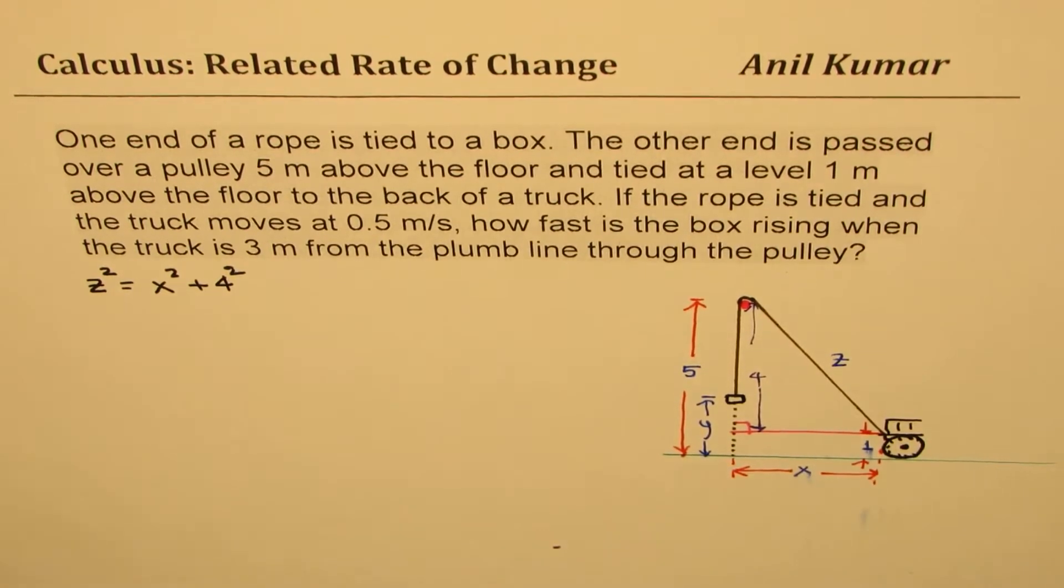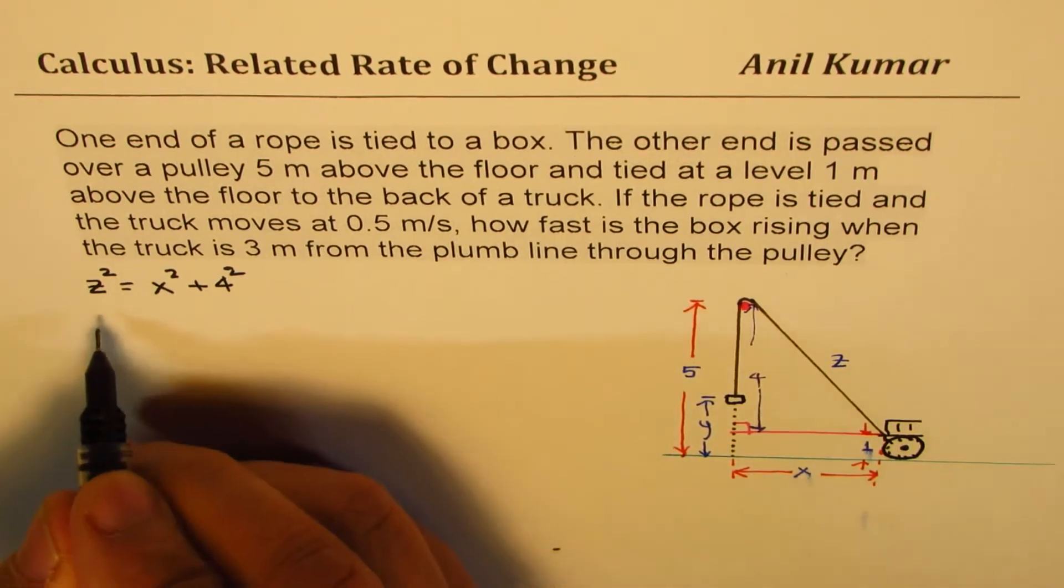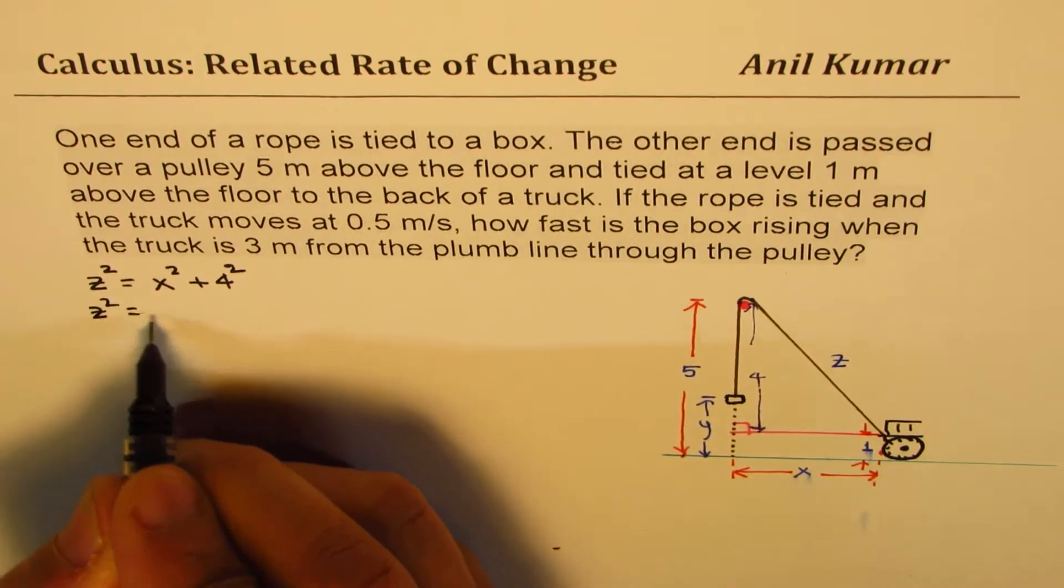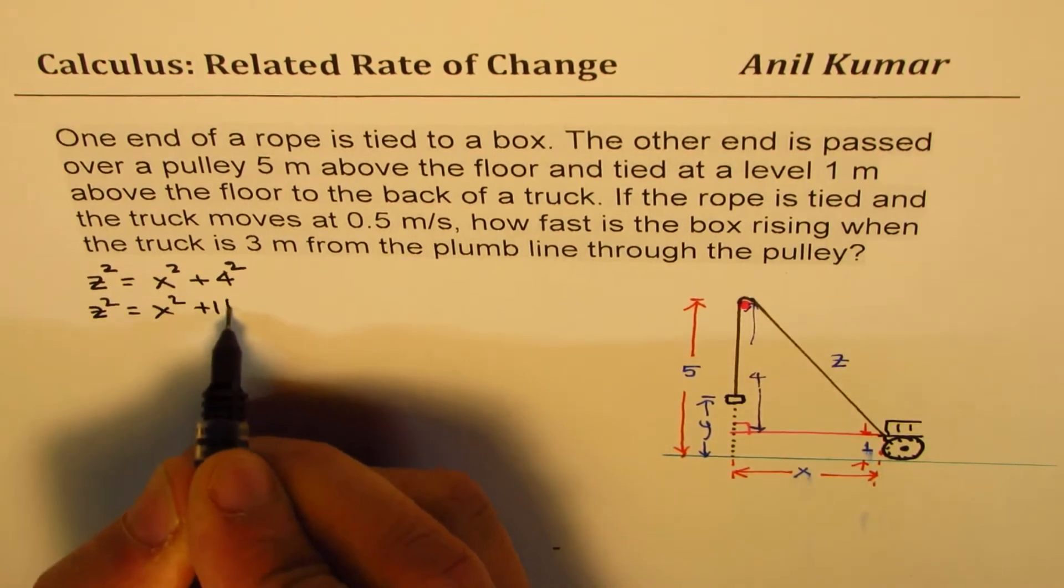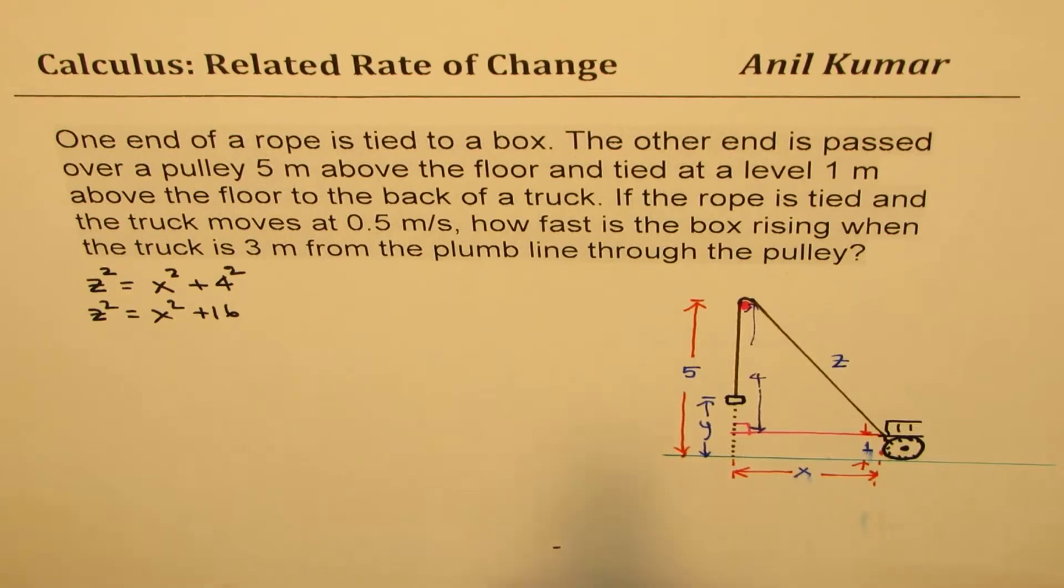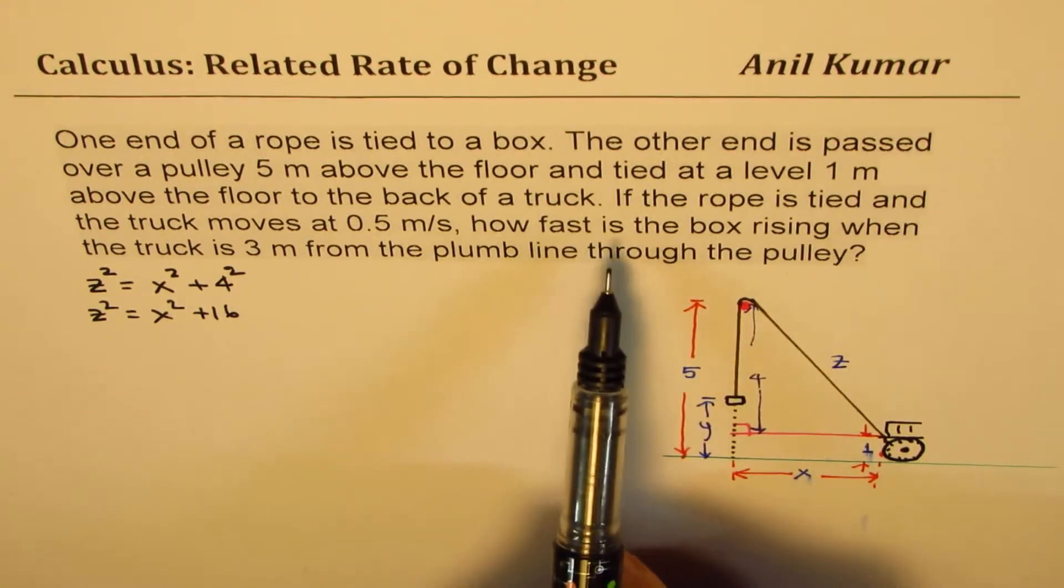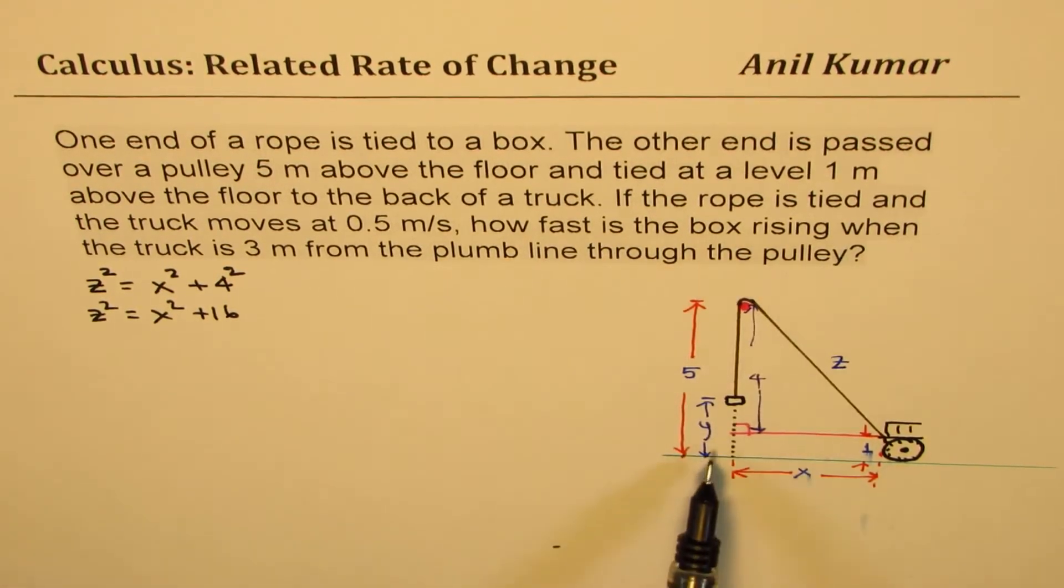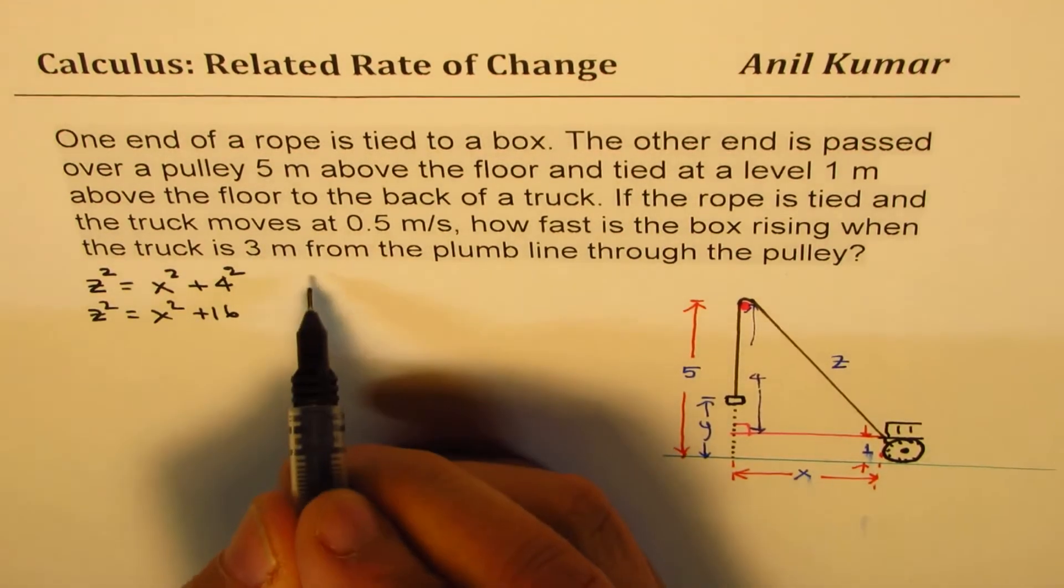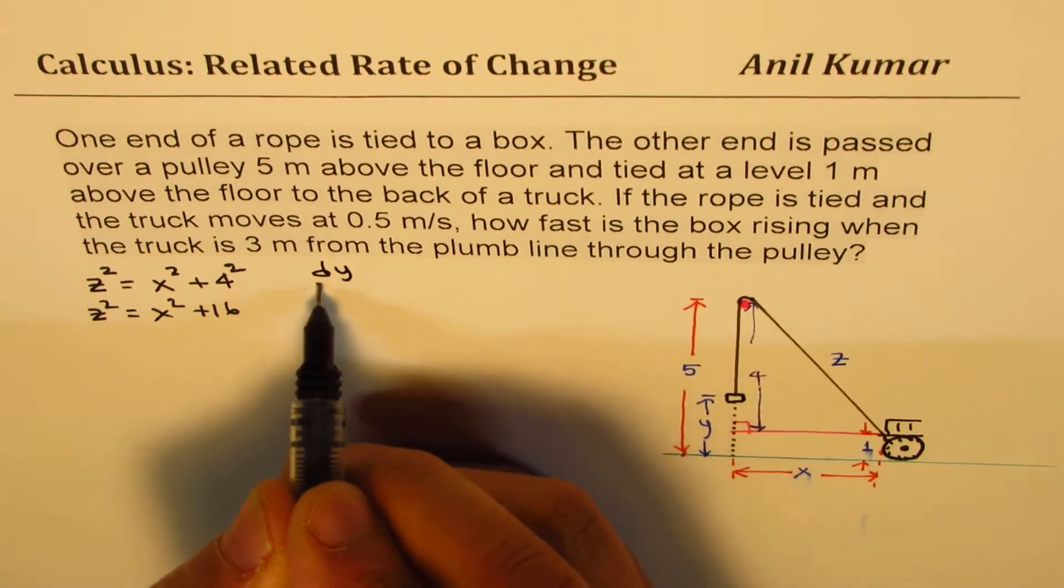So Z squared is X squared plus 4 squared is one of your equations, which I could write here clearly as Z squared equals X squared plus 16. Now, what do we need to find? How fast is the box rising? So I'm taking this height as Y, we need to find what is dy/dt.